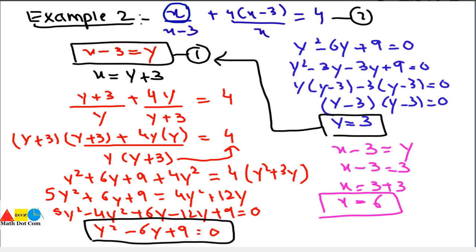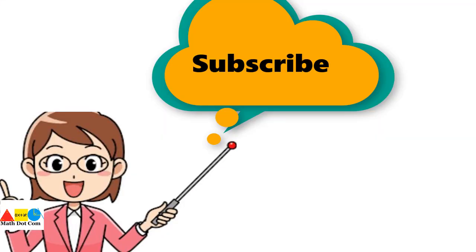The solution set is {6}. This is how you can reduce complex equations to the standard form of the quadratic equation by making a suitable substitution, in order to solve them using the easiest methods. Thank you for watching. If you like this video, please don't forget to subscribe to our channel for more updates.